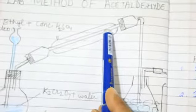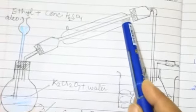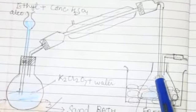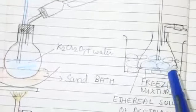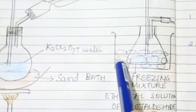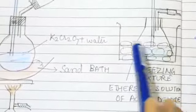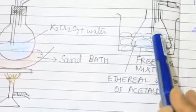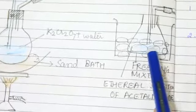When this gas passes through the condenser, it again changes into liquid. And with this tube, it goes to freezing mixture. This is the conical flask which is kept in ice. This container contains ice and the conical flask is in the ice.